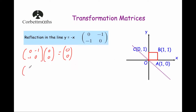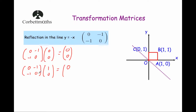Next, the point at A. Take the matrix again, 0, -1, -1, 0, and multiply the point at A, which is (1, 0). We get 0×1 = 0, -1×0 = 0, adding them together is 0. Multiplying the second row by the column: -1×1 = -1, 0×0 = 0, so that is -1. So point A will be reflected in the line y = -x and we get A' at (-1, 0).